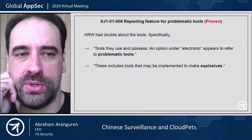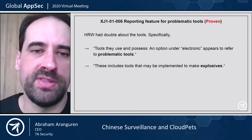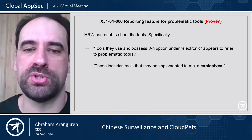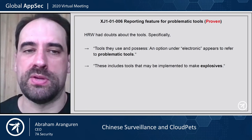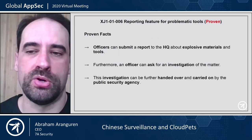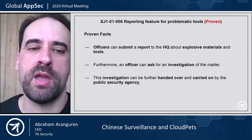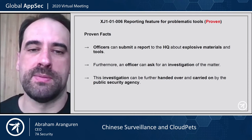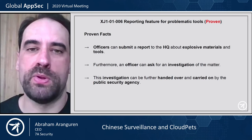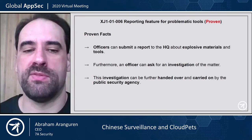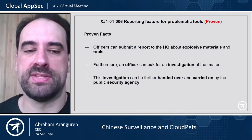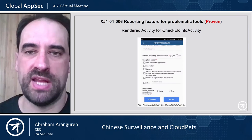There is also a reporting feature for problematic tools. They have doubts about specific tools people use and possess. An option under 'electronic' appears to refer to problematic tools, including tools that may be used to make explosives. Officers can submit a report to headquarters about explosive materials and tools, and an officer can ask for investigation, which can be further carried on by the public security agency.